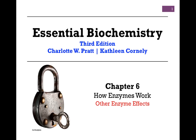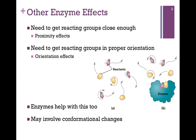We're continuing our studies in Chapter 6, How Enzymes Work, and in this lesson we want to see some other effects that enzymes have. We saw in previous lessons that all enzymes work by lowering the activation energy and making it more likely that we'll form more product per unit time. In other words, they lower the energy of the transition state and stabilize the intermediate. But we see they have other effects as well.